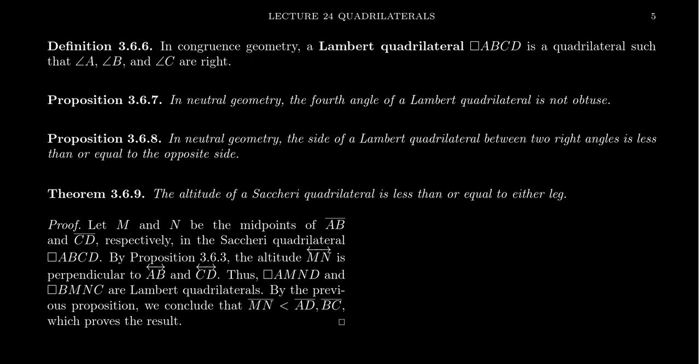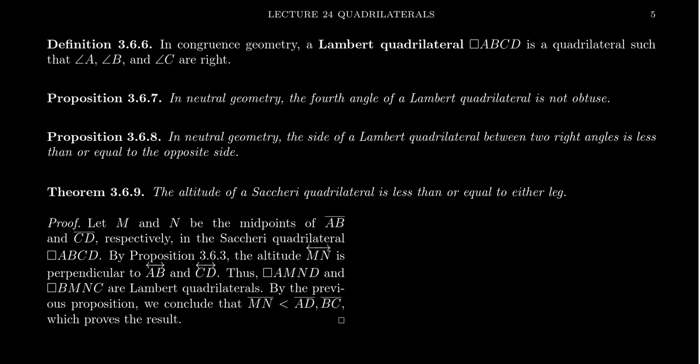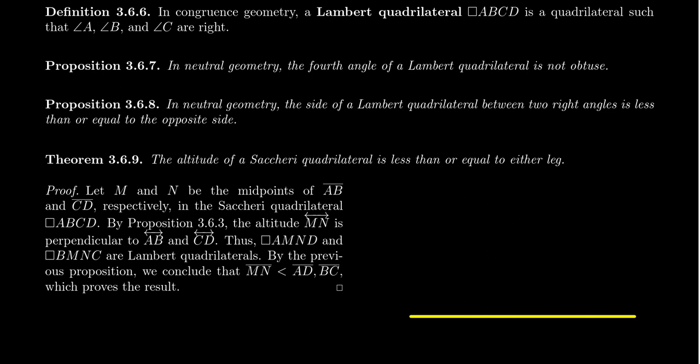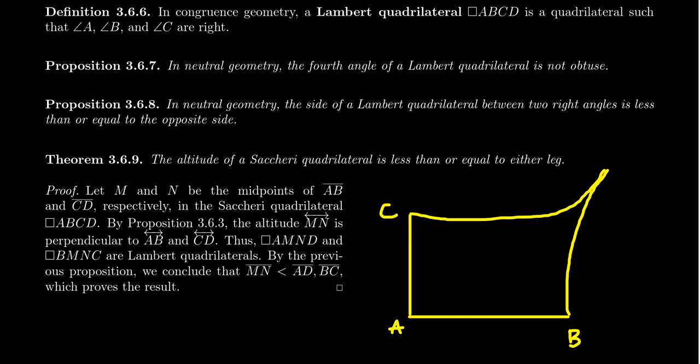A Lambert quadrilateral ABCD is a quadrilateral with three right angles at A, B, and C. We make no assumptions about the fourth angle, angle D. So I'm going to draw a picture of what a typical Lambert quadrilateral might look like — vertices A, B, C, and D — where by assumption angles A, B, and C are all right angles, but angle D, the so-called fourth angle, we don't actually know.